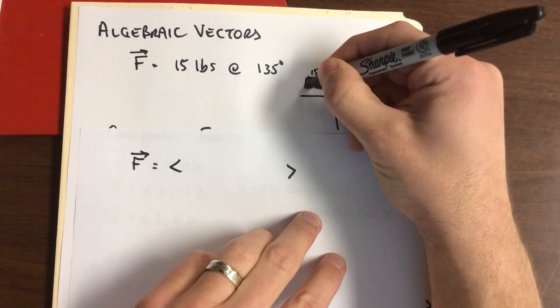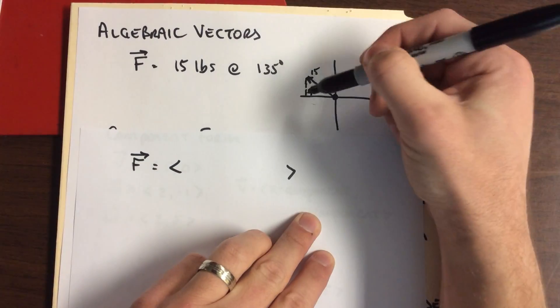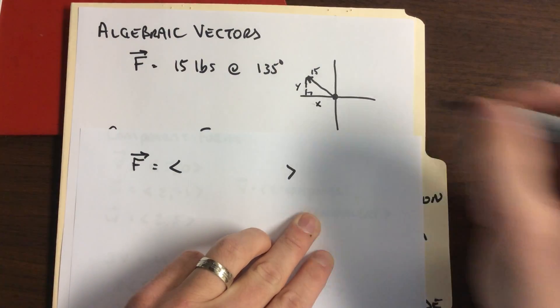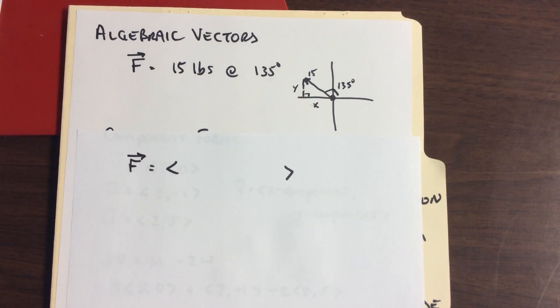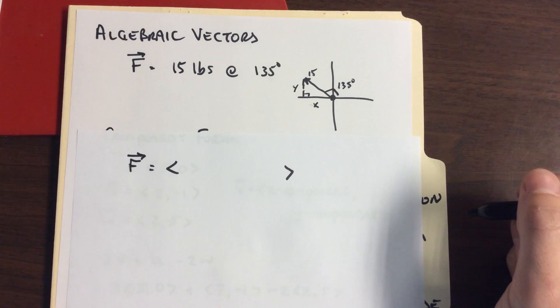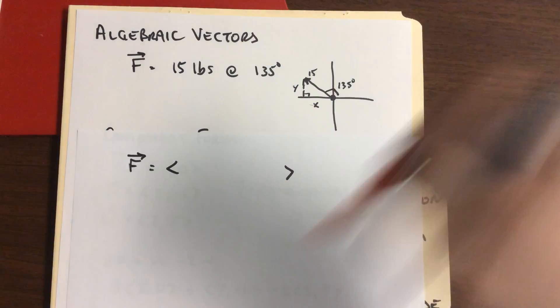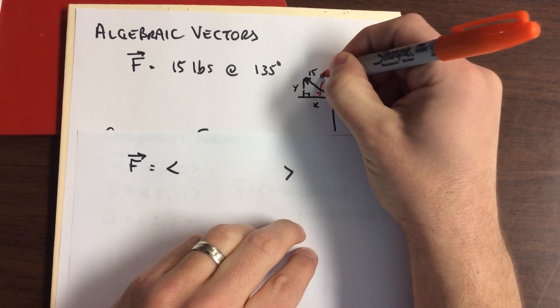That's our components. We need the horizontal component, we need the vertical component. We need that x, we need that y. There's our 135 degree angle. You can subtract 180 from 135, but it's inside it. So we know from trig, because we have mastered trig at this point, that's 45 degrees.